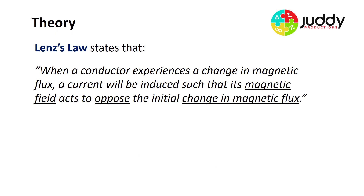Lenz's Law states that when a conductor experiences a change in magnetic flux, a current will be induced such that its magnetic flux acts to oppose the initial change in magnetic flux. We'll look at six different examples in this video of how we can apply Lenz's Law to predict the direction of the induced current of a coil in the presence of a changing magnetic flux.